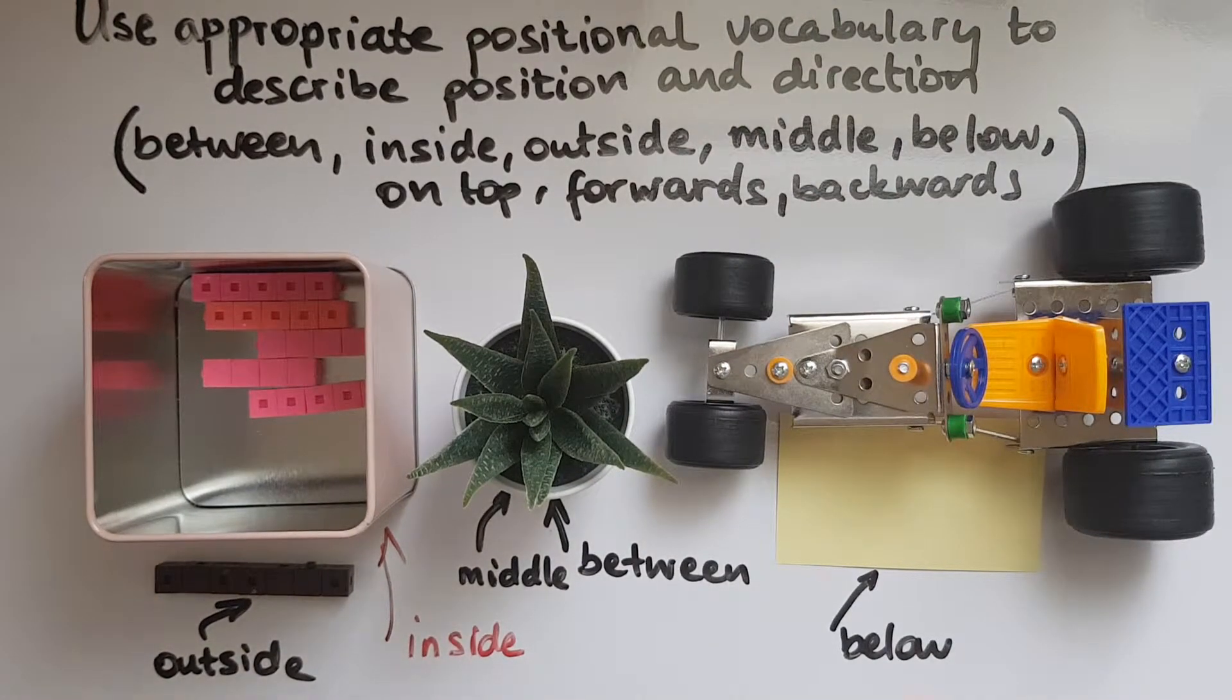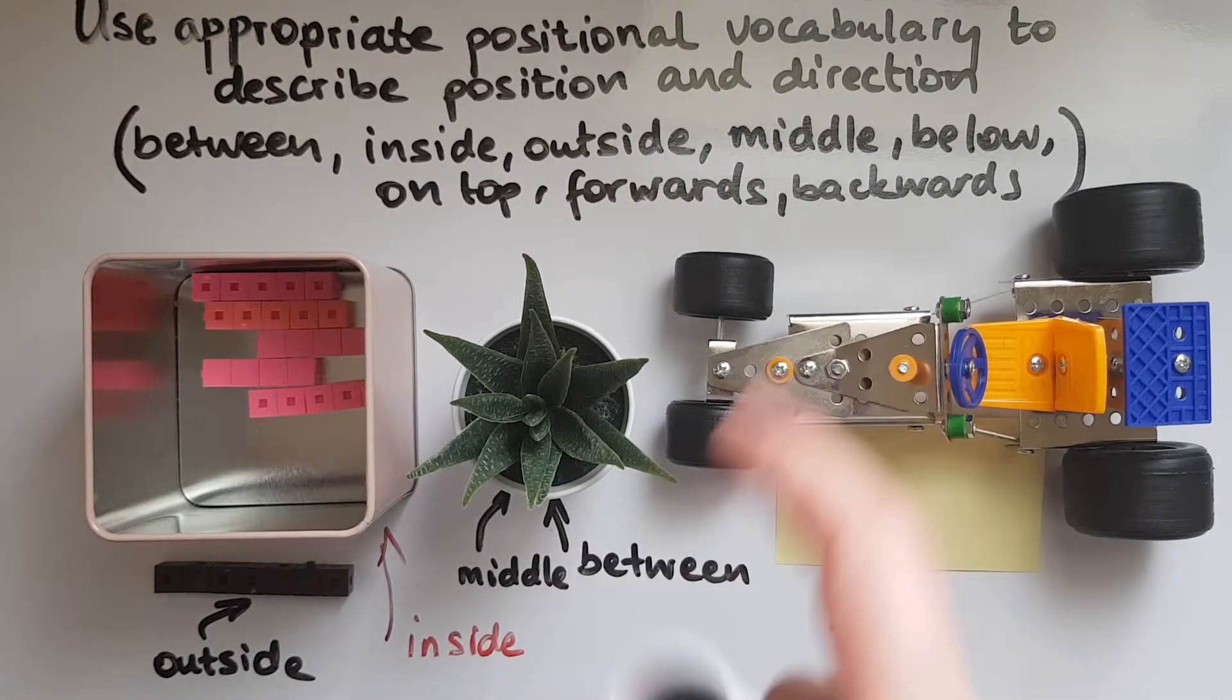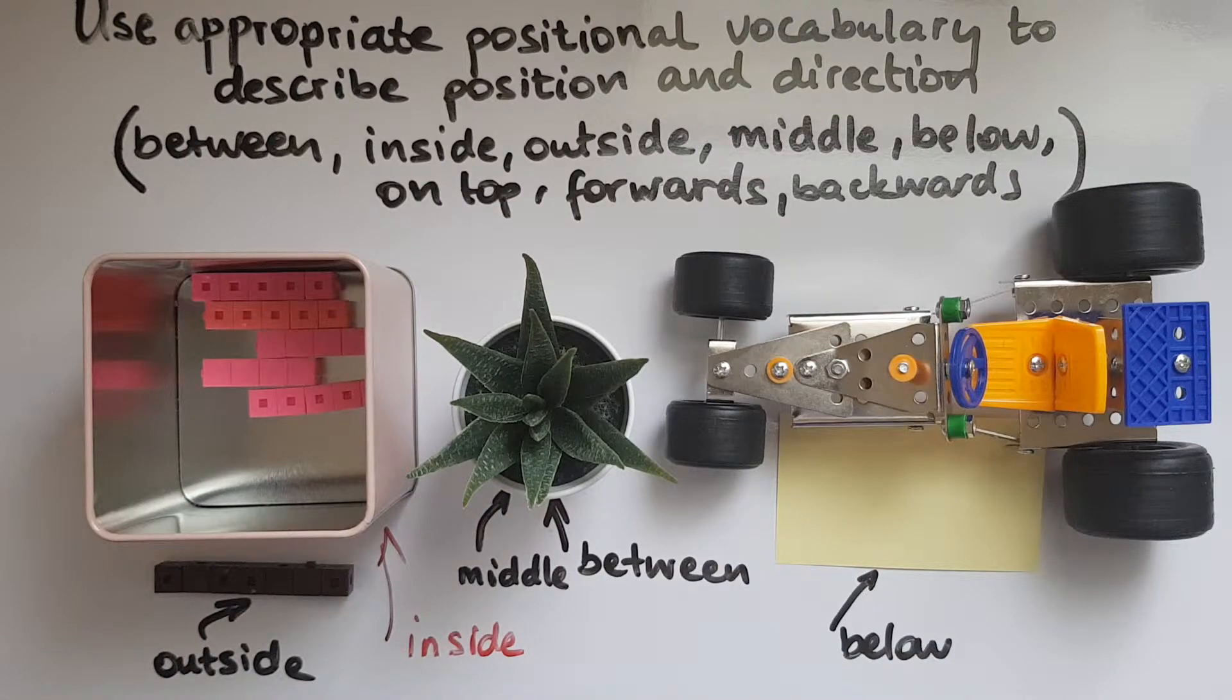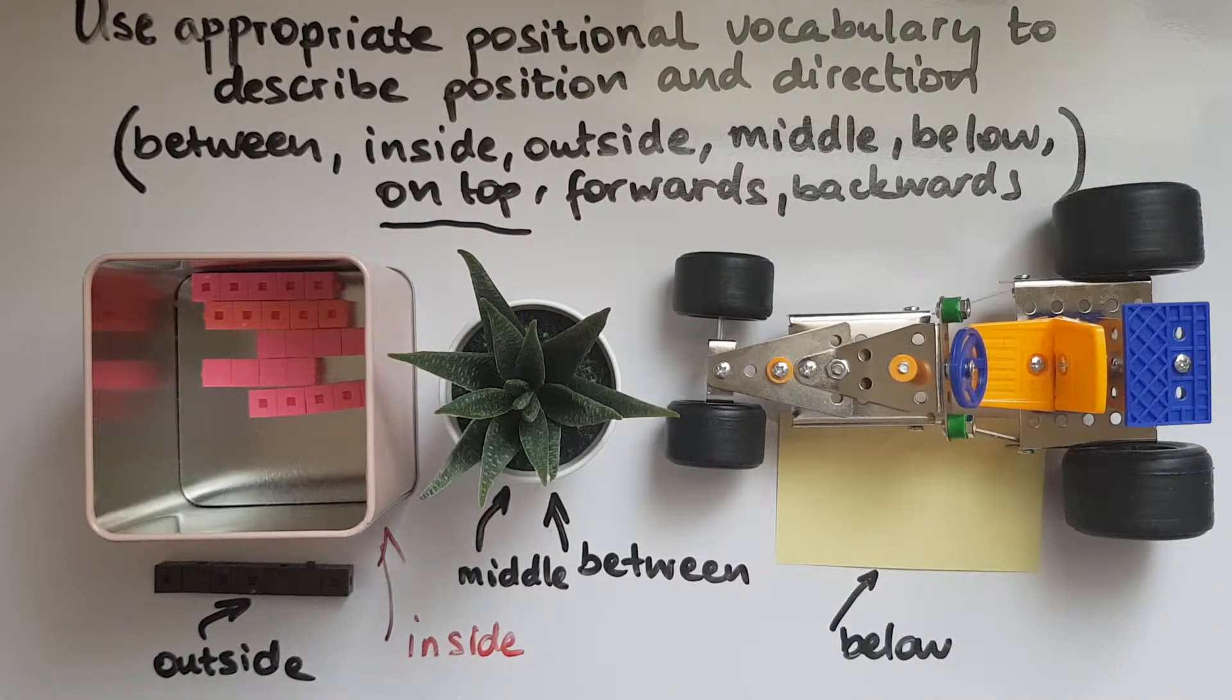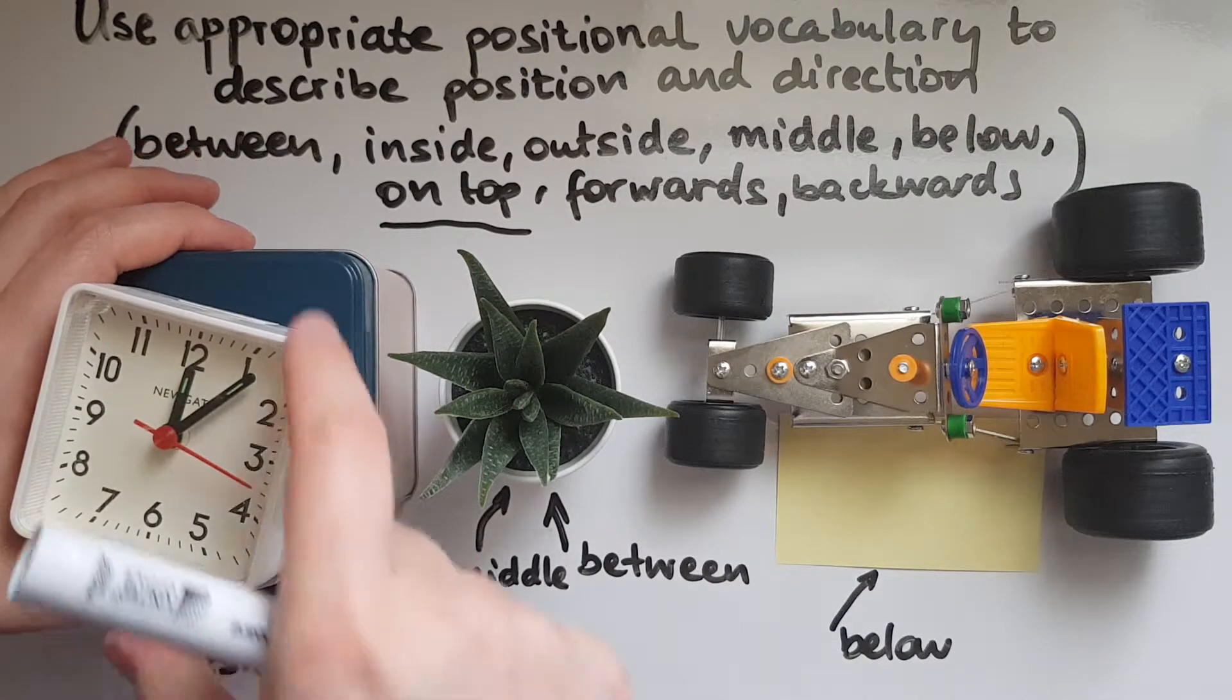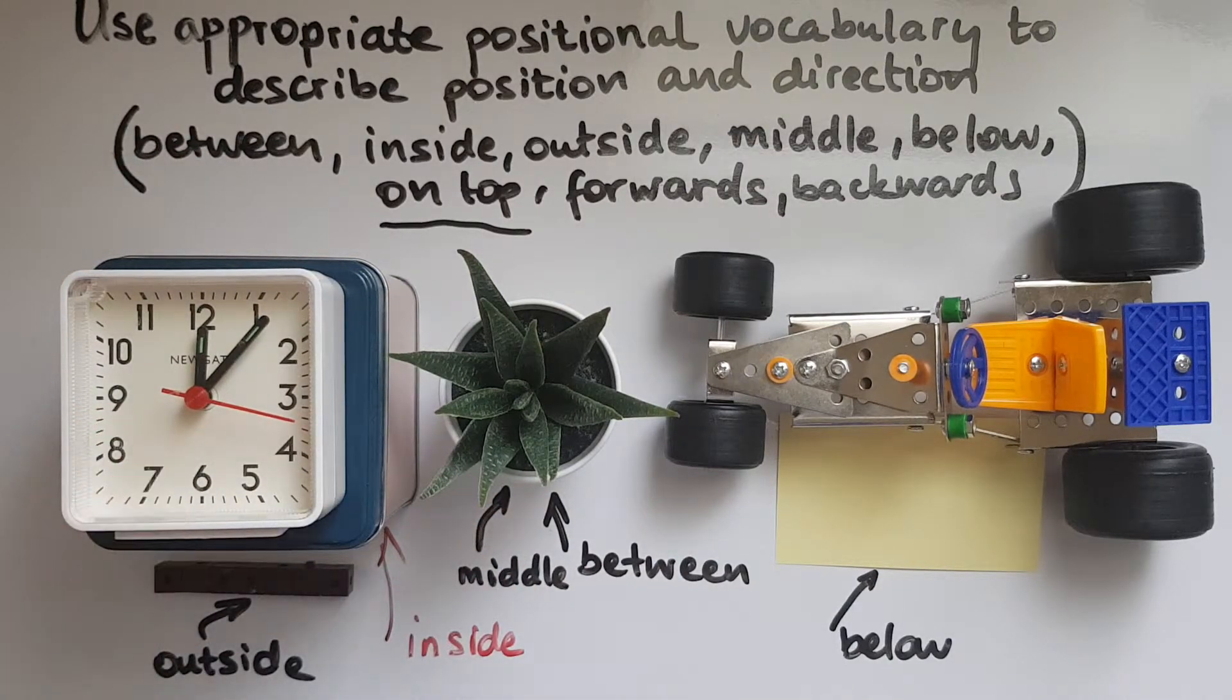And the title is actually on top. The title is on top and these are below. So this title is actually on top. And what is on top of the tin? On top of the tin there is a clock. So the clock is on top.